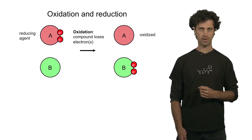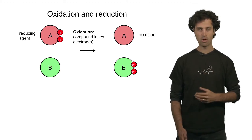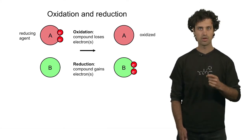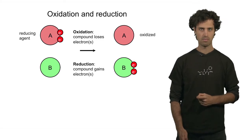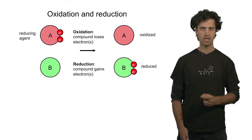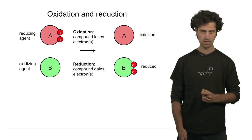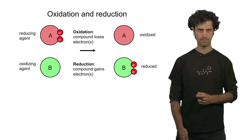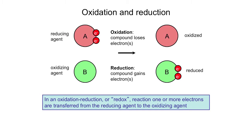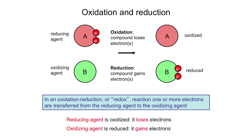Compound B, on the other hand, has gained electrons. We call this step of the reaction the reduction step. B is therefore reduced, and it acts as the oxidizing agent in the redox reaction. So we see that in redox reactions, one or more electrons are transferred from the reducing agent to the oxidizing agent. In this process, the reducing agent is oxidized — it loses electrons — and the oxidizing agent is reduced and gains electrons.